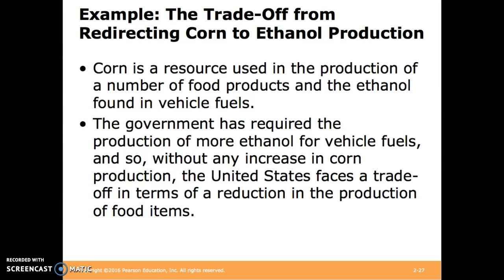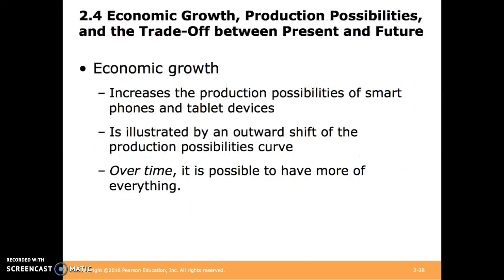Let's discuss an example of trade-offs. Corn is used in the production of many food products, and it's also used in ethanol for fuels. If the government requires the production of more ethanol for fuels, and we don't increase corn production, the United States has to decide between ethanol and food items. Through economic growth, we can increase the production possibilities of smartphones and tablet devices. Over time, we can produce more of pretty much everything. We can see an illustration of how the PPC shifts outward with an increase in technology or economic growth in the next slide.